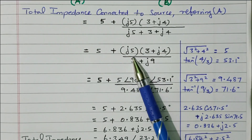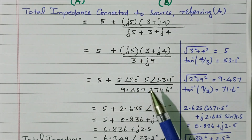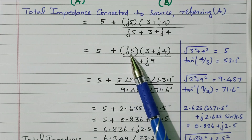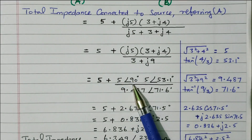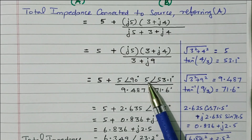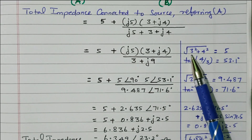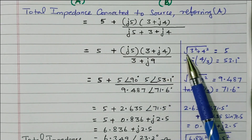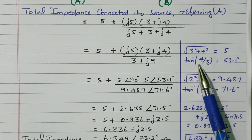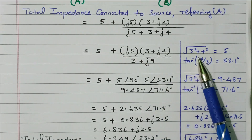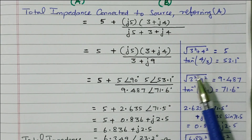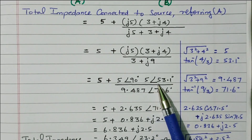We need to convert this to polar form. Rectangular form is easier for addition; polar form is needed for multiplication and division. J5 has magnitude 5 at 90 degrees, since every J refers to 90 degrees. To convert 3 plus J4 to polar form: magnitude equals square root of 3 squared plus 4 squared, which is square root of 25, equals 5. The angle is tan inverse of 4 by 3, which is 53.1 degrees. So 3 plus J4 equals 5 angle 53.1 degrees.